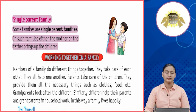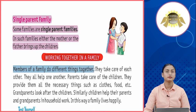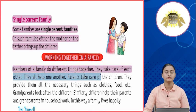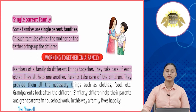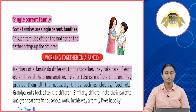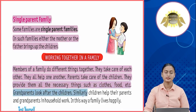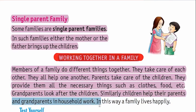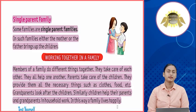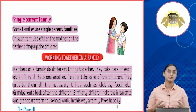Working together in a family: members of a family do different things together. They take care of each other and help one another. Parents take care of the children and provide them all the necessary things such as clothes, food, etc. Grandparents look after the children. Similarly, children help their parents and grandparents in household work. In this way, a family lives happily.